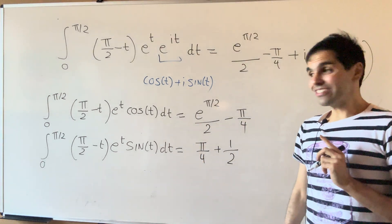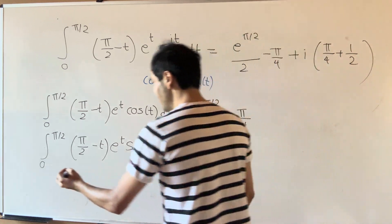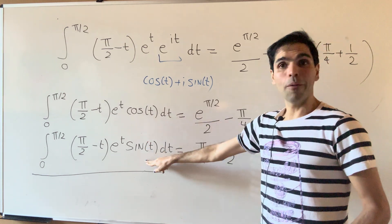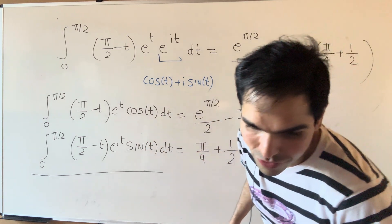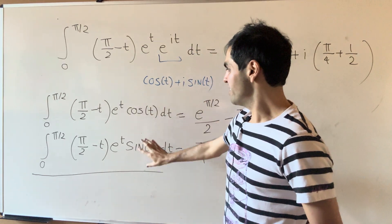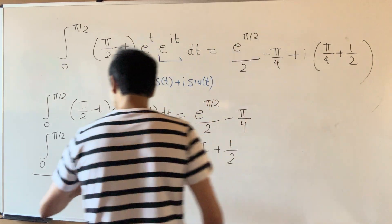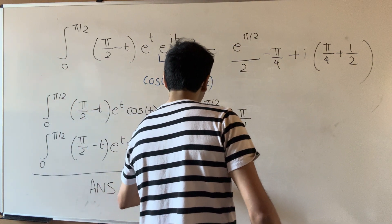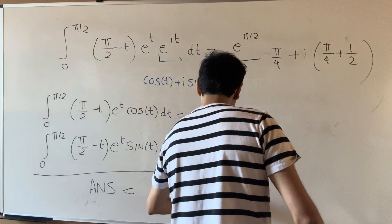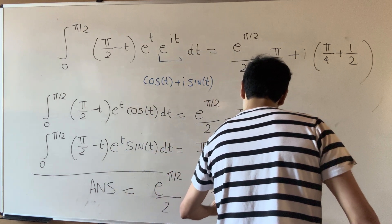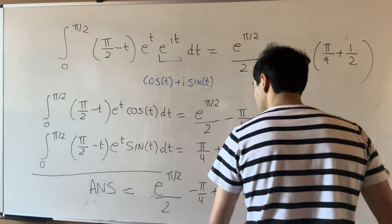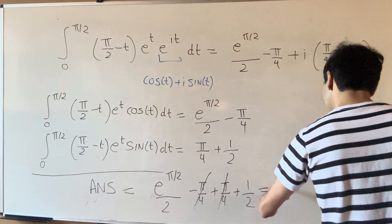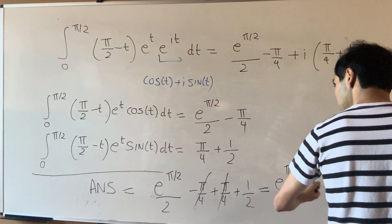And then what is our answer? Coming back to our original question, all we have to do now is add up the two integrals. So the answer is literally the sum of the two: e^(π/2)/2 − π/4 + π/4 + ½. And boom — the ±π/4 terms cancel out. In the end, we get (e^(π/2) + 1) / 2.